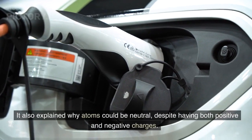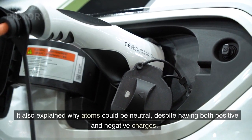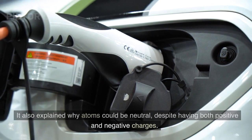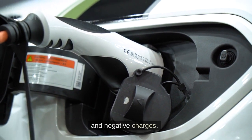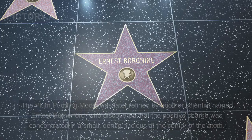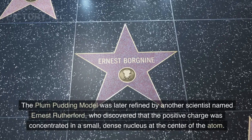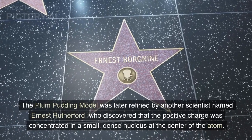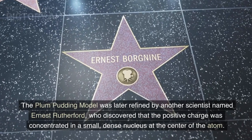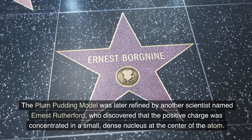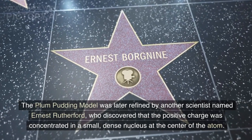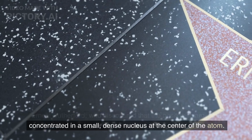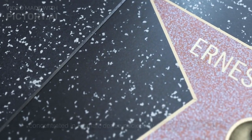It also explained why atoms could be neutral, despite having both positive and negative charges. The Plum Pudding Model was later refined by another scientist named Ernest Rutherford, who discovered that the positive charge was concentrated in a small, dense nucleus at the center of the atom.